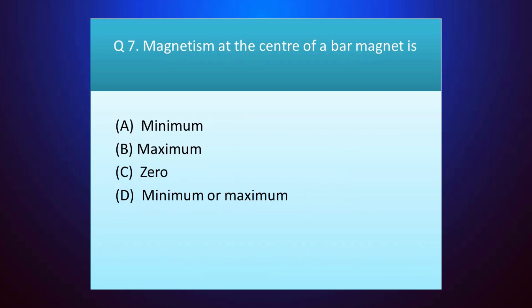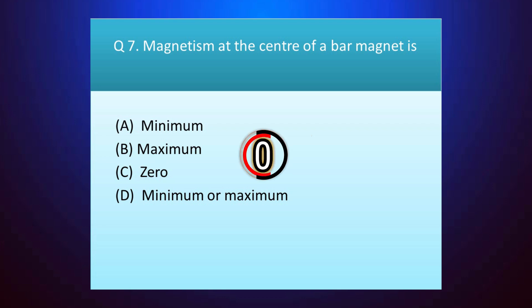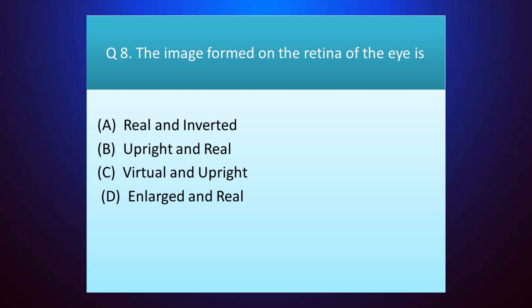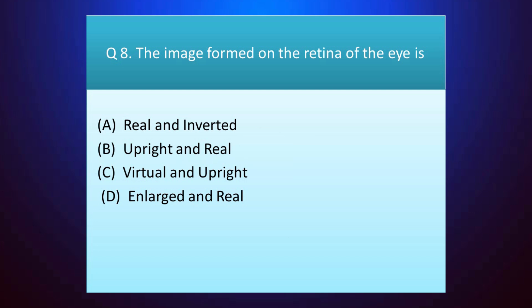Question number seven: magnetism at the center of a bar magnet is — your time starts. Question number eight: the image formed on the retina of the eye is — your time starts. The answer is option A — real and inverted.